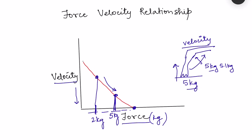There is a maximum load which our muscle can lift. Say suppose for me it can be 10 kg — if the weight is 11 kg, the total amount of force which my muscles generate is not enough to lift it. So this is known as maximum force. Obviously, if my muscle cannot lift that load, there will be no velocity of shortening — it cannot even shorten.